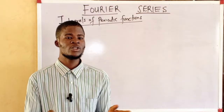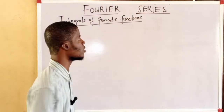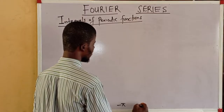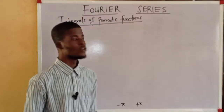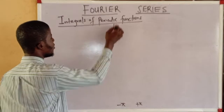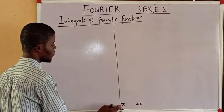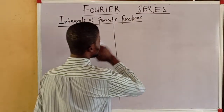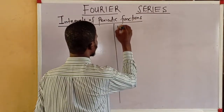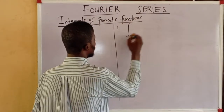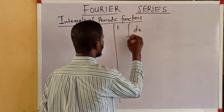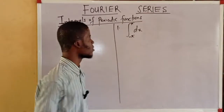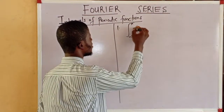The integration is over a single period from negative pi to positive pi. Let's go through some of them. The first integral we are going to consider is the integral of dx from negative pi to pi. This is actually 1 dx.